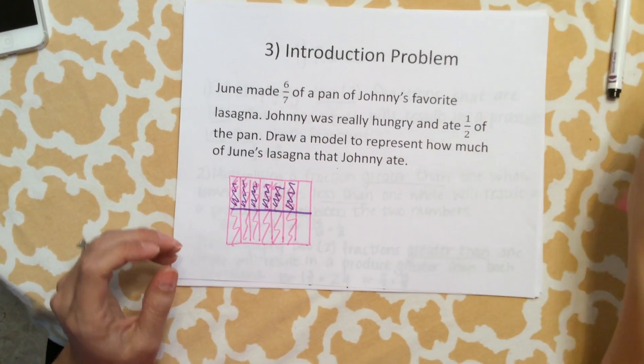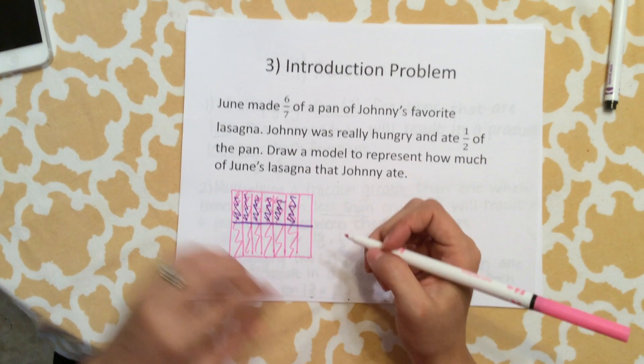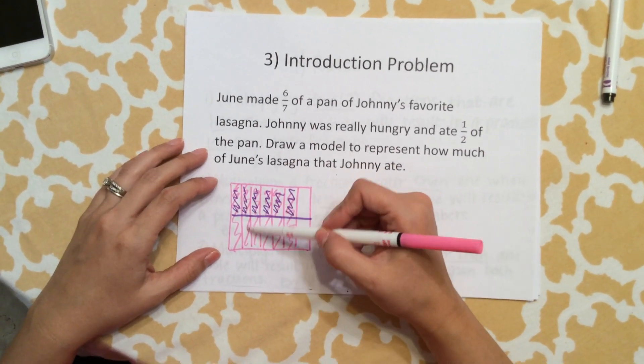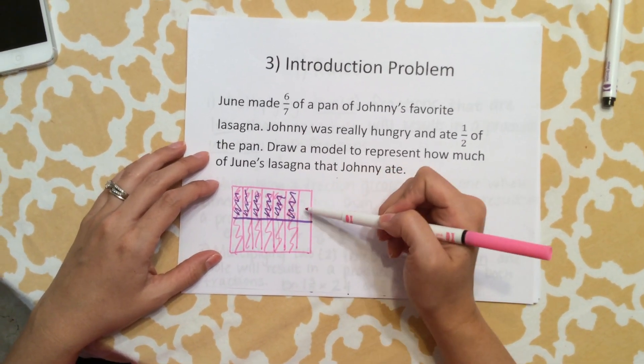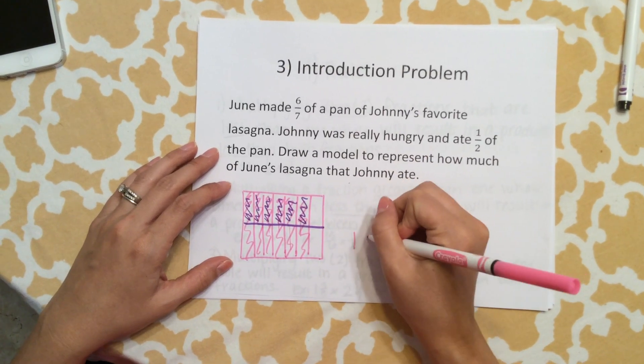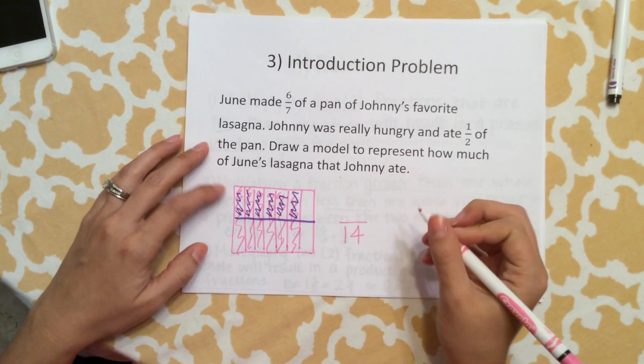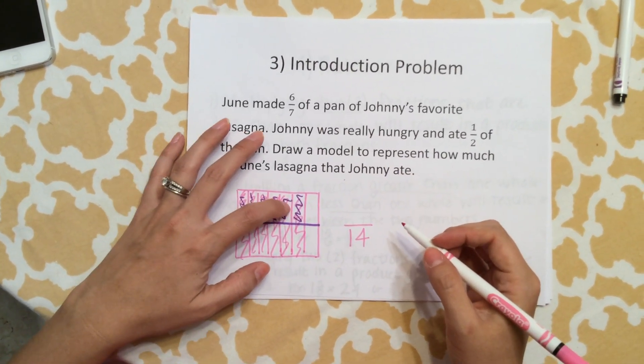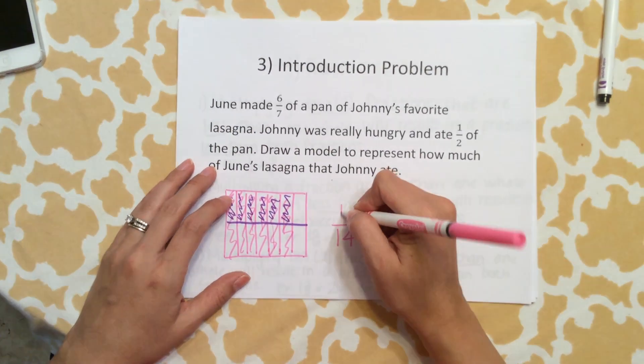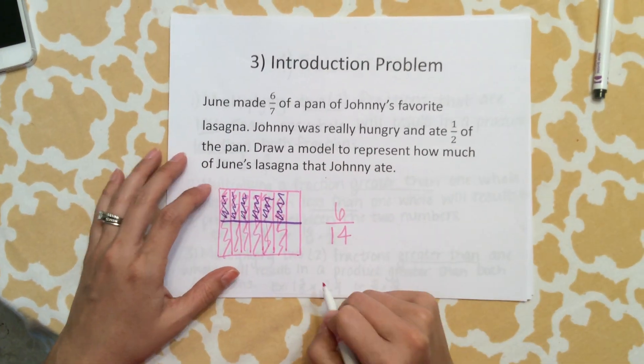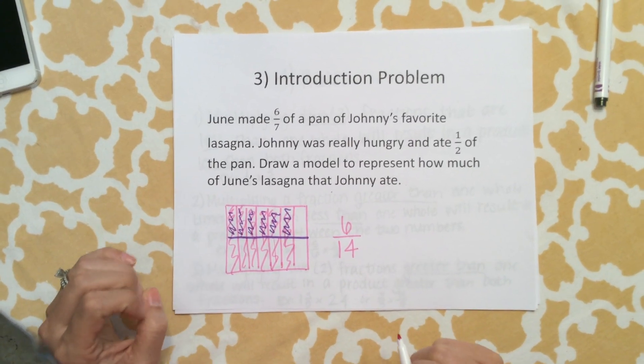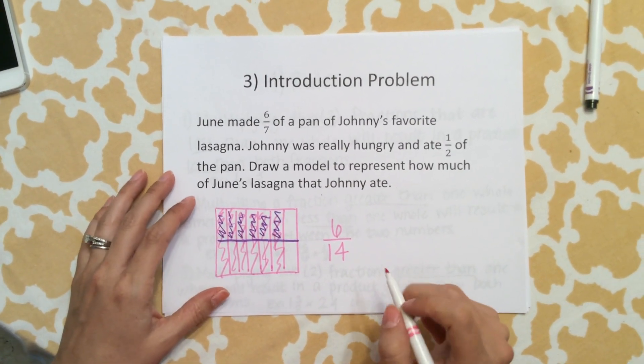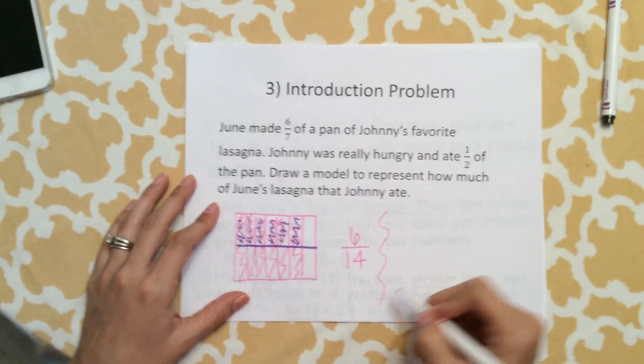What portion of June's lasagna did Johnny eat? If we count up our boxes, we have 2, 4, 6, 8, 10, 12, 14 total boxes, and 1, 2, 3, 4, 5, 6 are shaded with both colors. So Johnny ate 6/14 of June's lasagna.